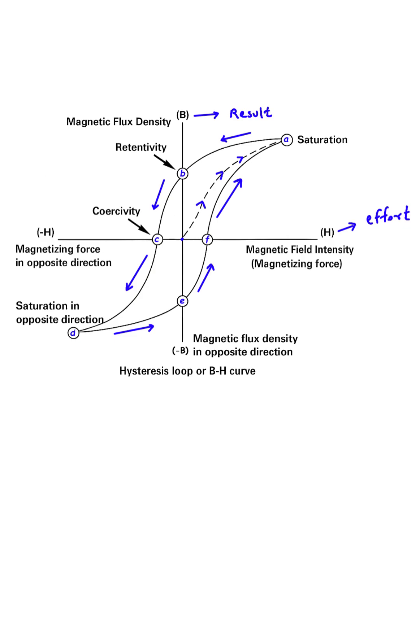Our journey begins at the center, where the material is completely unmagnetized. As we start applying a magnetizing force, or effort, we move along the dashed line. You can see that as the effort increases to the right, the magnetic result increases upwards.